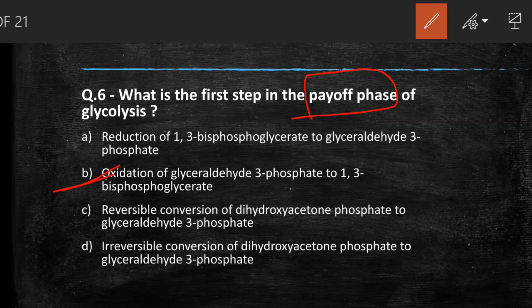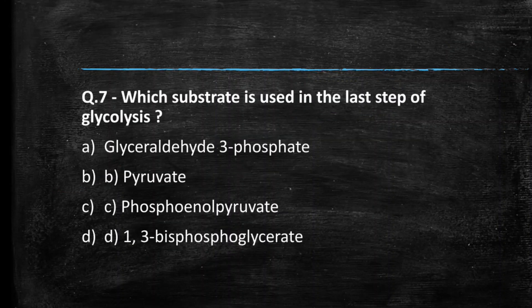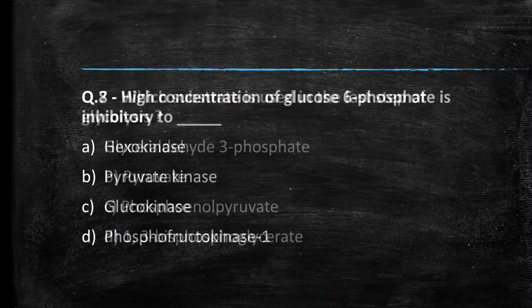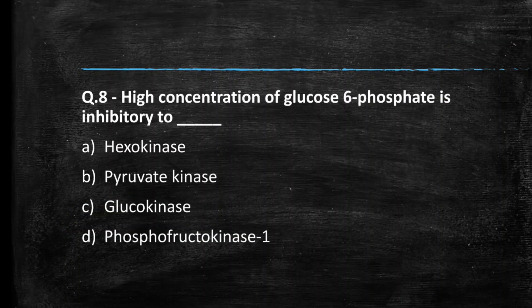Next question: which substrate is used in the last step of glycolysis? (A) Glyceraldehyde-3-phosphate, (B) Pyruvate, (C) Phosphoenolpyruvate, (D) 1,3-bisphosphoglycerate. In the last step the substrate is phosphoenolpyruvate, so the right answer is option C.